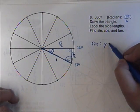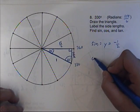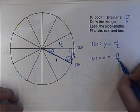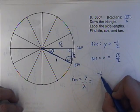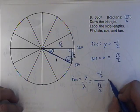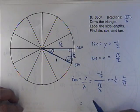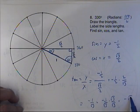The sine is your y value, which is your vertical here — negative 1 half. Cosine is your x value, which is your horizontal — square root of 3 over 2. And tangent is y divided by x, which would be negative 1 half divided by the square root of 3 over 2, which is negative 1 half times 2 over root 3. Just like the last three examples, the 2's cancel, then multiply by the square root of 3 on the top and the bottom, which gives you negative root 3 over square root of 9, which is just 3.